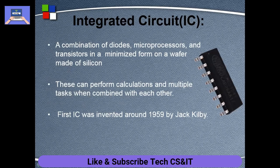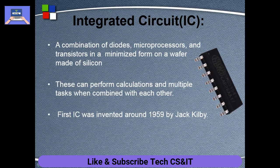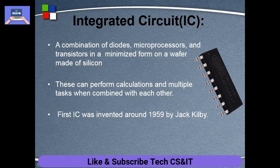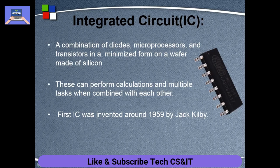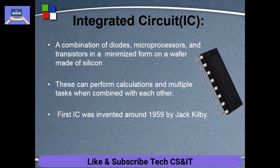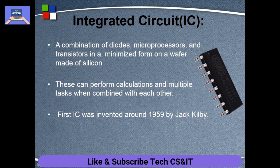Because all of these components combined together perform a task very quickly and within very small time. These can perform calculations and multiple tasks when combined with each other. The IC was invented around 1959.